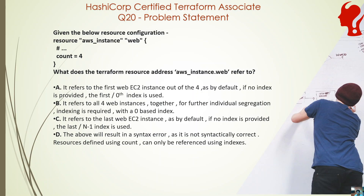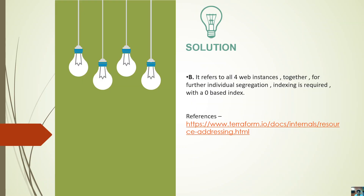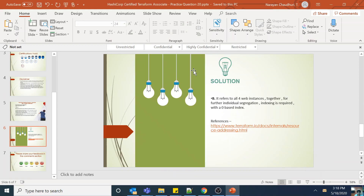Most importantly, this is something you actually need for your day-to-day activities or work with Terraform. It is very important that you know this. As you can see, the answer is B — it refers to all four web instances together. For further individual segregation, indexing is required with a zero-based index. So the answer is B.